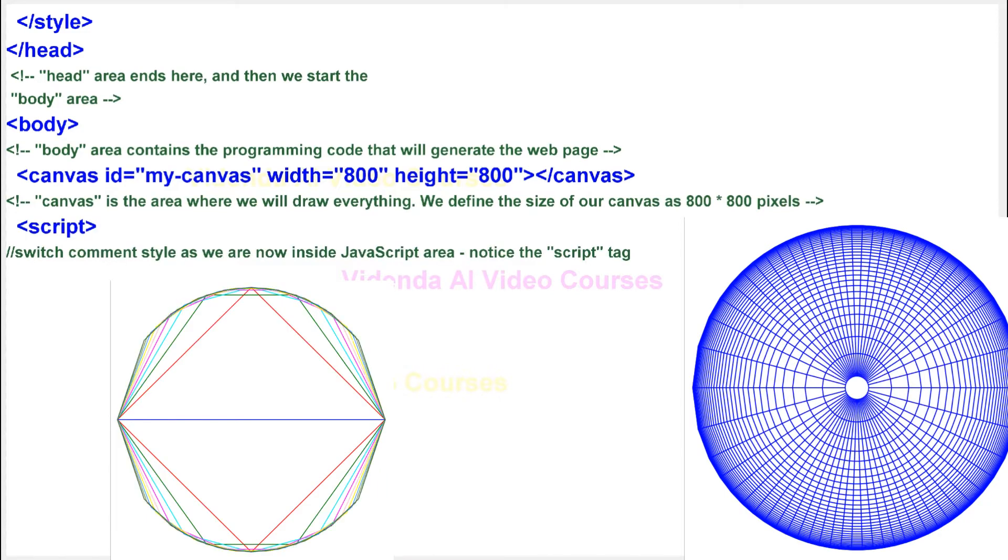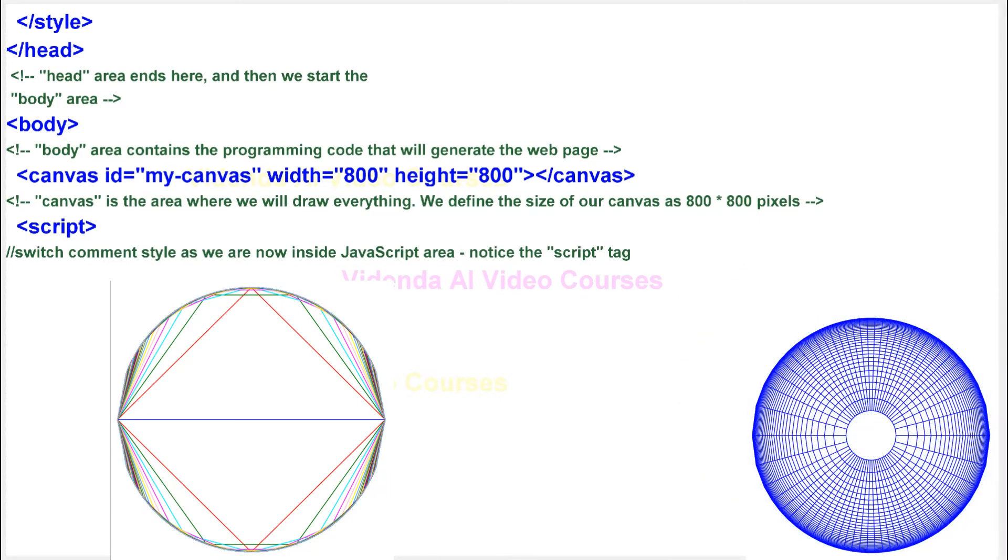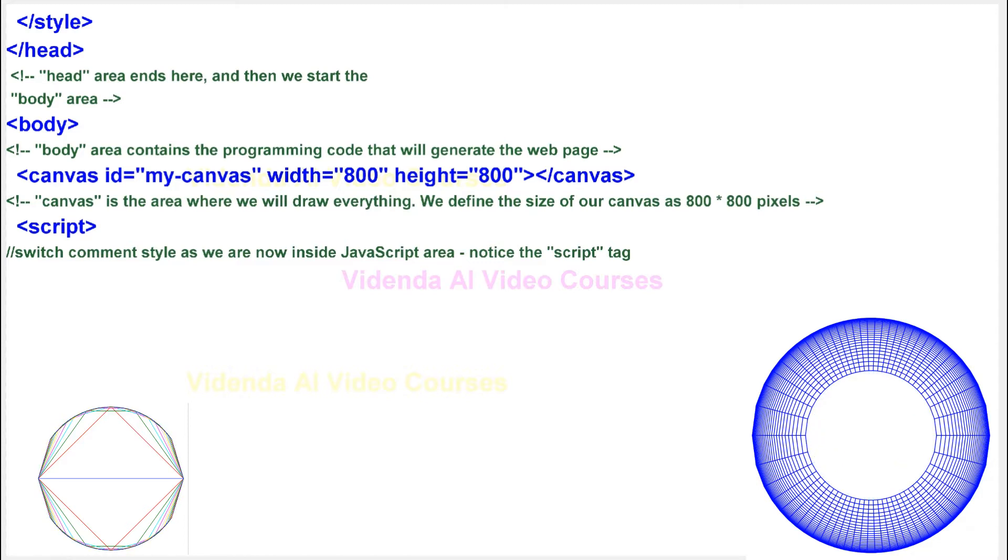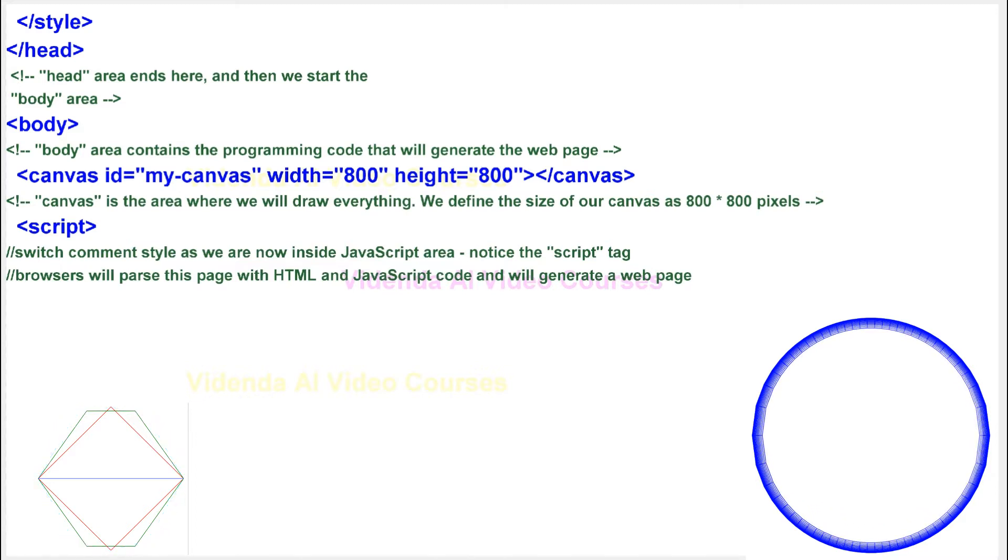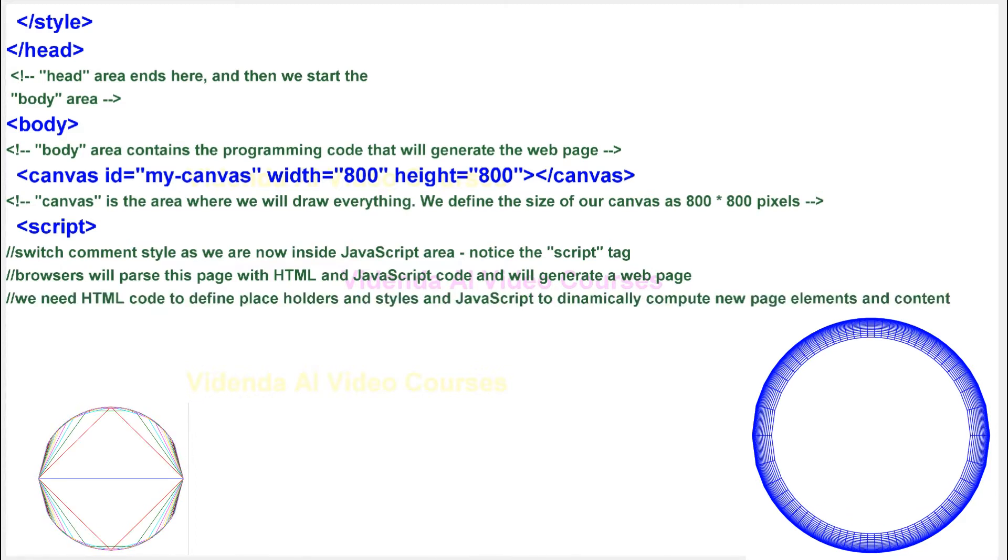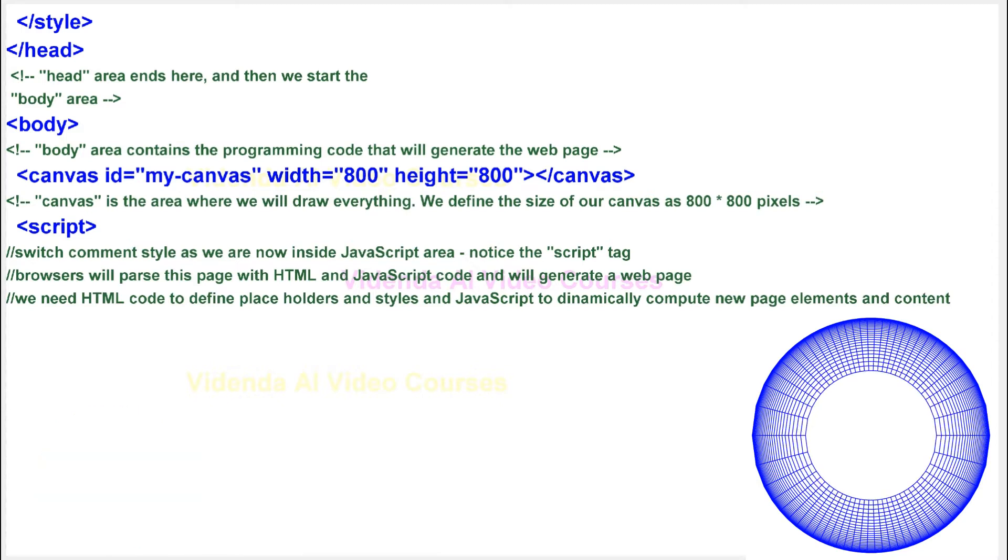Switch comment style as we are now inside JavaScript area. Notice the script tag. Browsers will parse this page with HTML and JavaScript code and will generate a web page. We need HTML code to define placeholders and styles and JavaScript to dynamically compute new page elements and content.